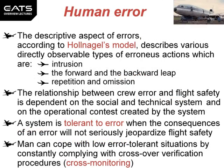The descriptive aspect of errors, according to Holnagel's model, describes various directly observable types of erroneous actions which are: intrusion, the forward and the backward leap, repetition and omission. The relationship between crew error and flight safety is dependent on the social and technical system and on the operational context created by the system. A system is tolerant to error when the consequences of an error will not seriously jeopardise flight safety.